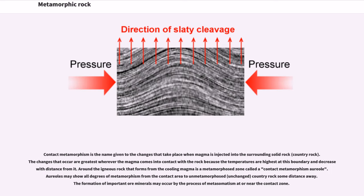Contact metamorphism is the name given to the changes that take place when magma is injected into the surrounding solid rock, called country rock. The changes that occur are greatest wherever the magma comes into contact with the rock because the temperatures are highest at this boundary and decrease with distance from it. Around the igneous rock that forms from the cooling magma is a metamorphosed zone called a contact metamorphism aureole. Aureoles may show all degrees of metamorphism from the contact area to unmetamorphosed country rock some distance away. The formation of important ore minerals may occur by the process of metasomatism near the contact zone.